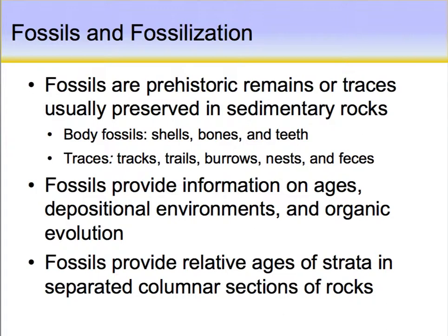Fossils provide information on ages, depositional environments, and organic evolution — really the change of a particular genus or species through time, which we see in the fossil record. Fossils also provide relative ages of strata in separate column sections of rocks. If we can identify a fossil assemblage — a group of fossils in one area indicating they all coexisted in time — and we see that same group in a different area, even in a totally different rock type, we know they represent a time-equivalent stratum or sequence of rock. That's one thing we do with correlation.